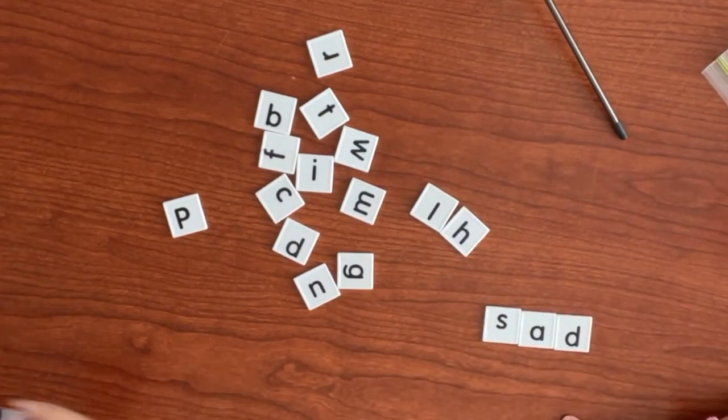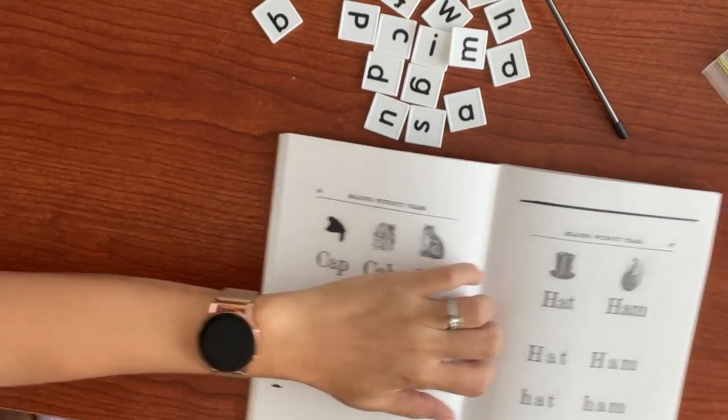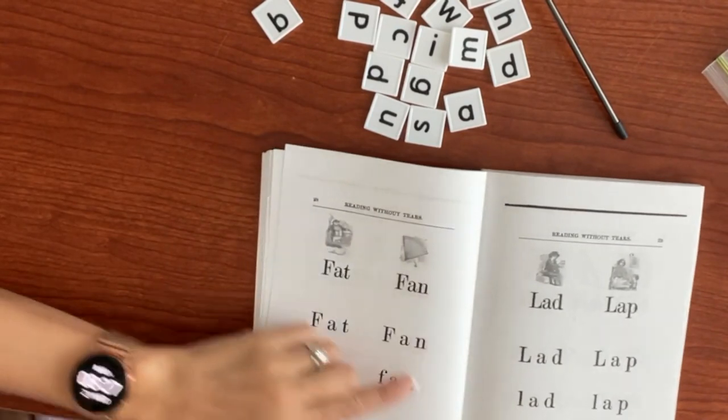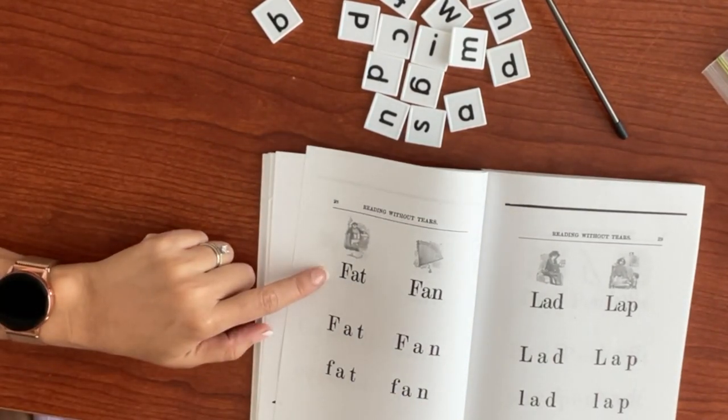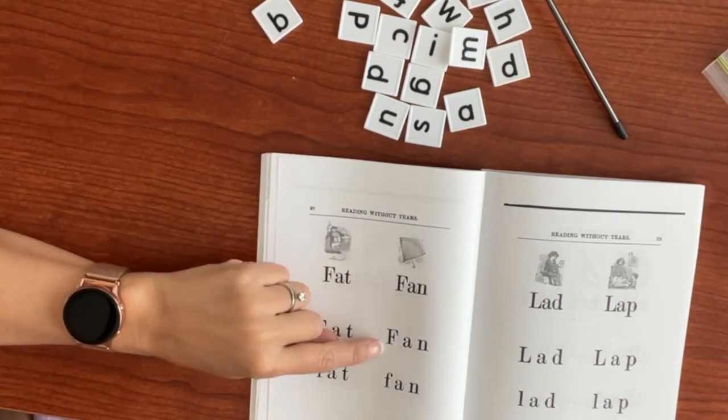Let's do a little reading. Cat. Cat. Cat. Hat. Hat. Hat. Ham. Ham. Ham. Good. Fan. No, no. It's fat. Fat. Fat. Fat. Good. This was fan. Fan. Good.